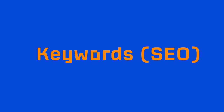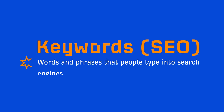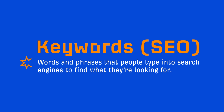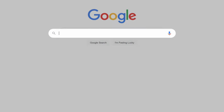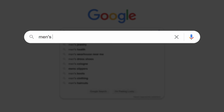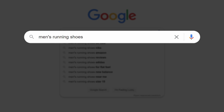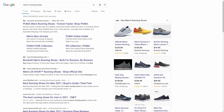So what are keywords in the context of SEO? They're simply just words and phrases that people type into search engines to find what they're looking for. For example, if you are shopping for running shoes, you might search for keywords like men's running shoes or simply just running shoes.